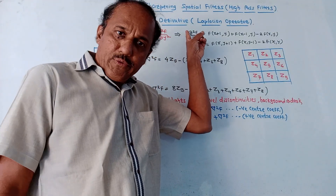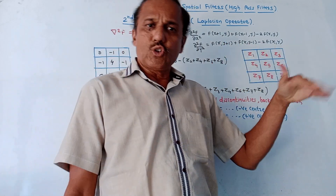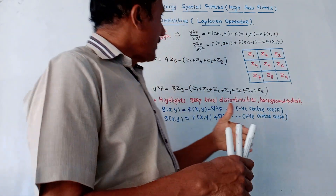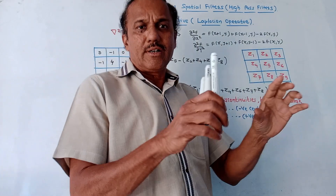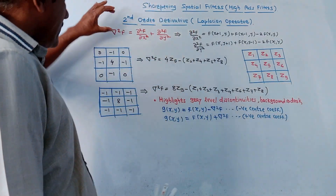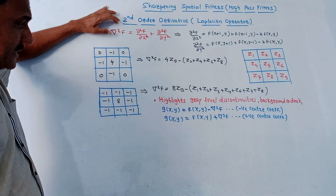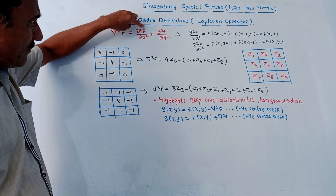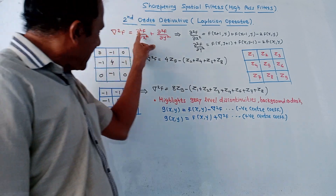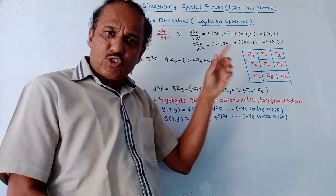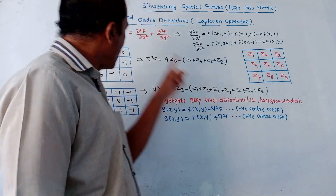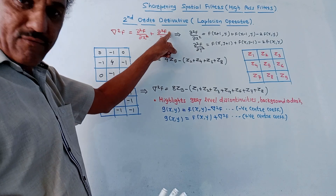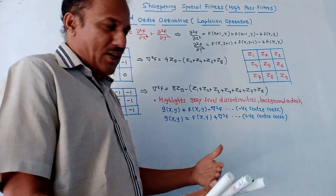The second order derivative is also called the Laplacian operation. The del-squared term is called the Laplace operator. The basic equation is: ∇²f = ∂²f/∂x² + ∂²f/∂y², where f(x,y) is the image. This represents the second order derivative with respect to both x and y.